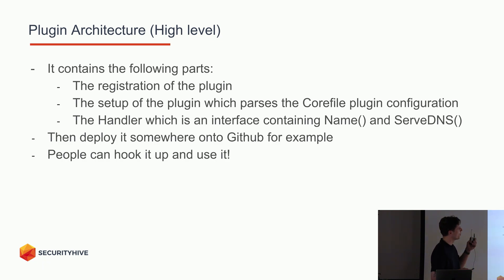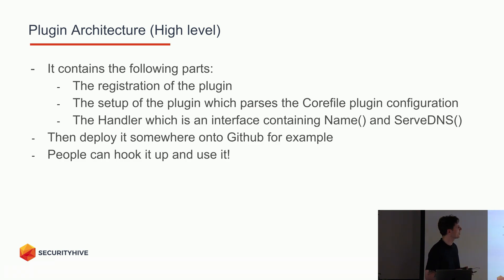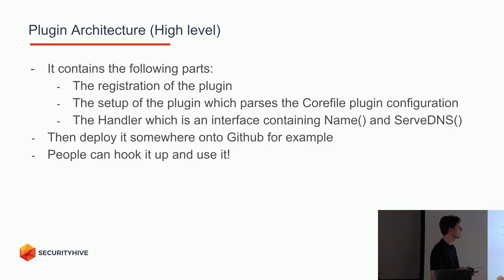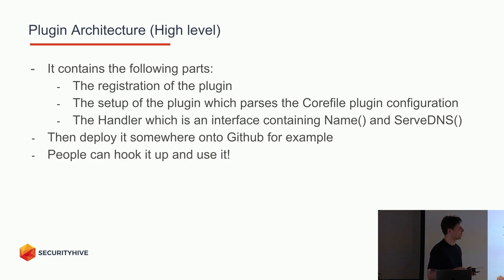On a high level the plugin architecture has three parts. The first part is the registration part — that's where we connect our plugin with CoreDNS. The second part is the setup, which is responsible for parsing the Corefile configuration and converting it to Go types that we want to use for our plugin. The third part — that's where the magic happens — we need to implement the plugin.Handler interface, which contains two methods: Name and ServeDNS. That's where we place our logic.